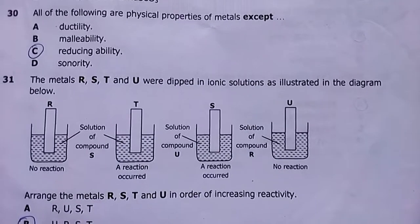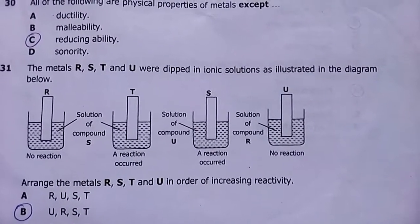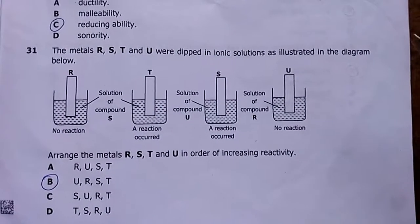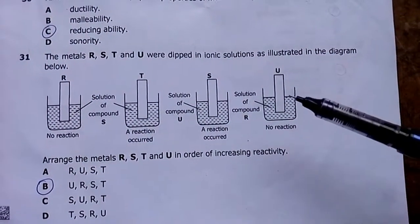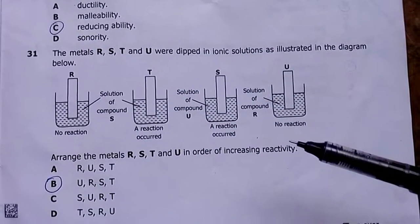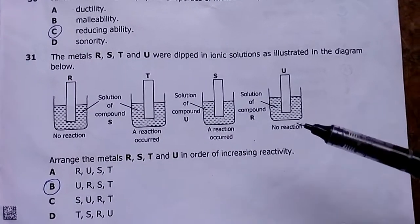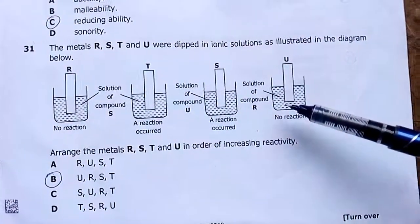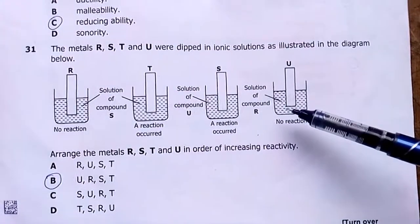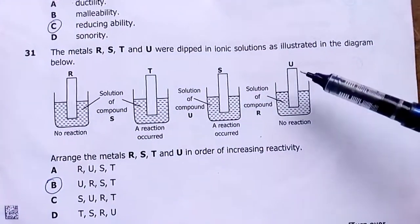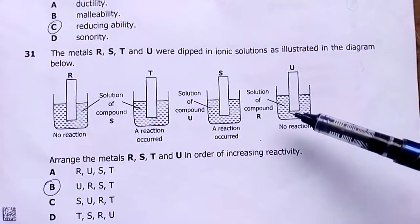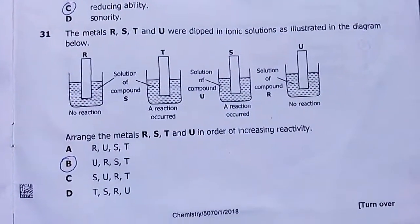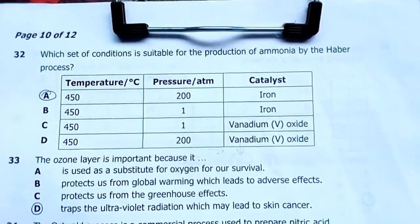Number thirty-one: metals R, S, T and U are dipped in ionic solutions. Arrange the metals in order of increasing reactivity. A reactive metal displaces a less reactive metal from its solution. Where no reaction occurs — for example R in U's solution — U is less reactive than R. Checking all combinations, the order from least to most reactive is U, then R, then S, then T. My answer was given accordingly.